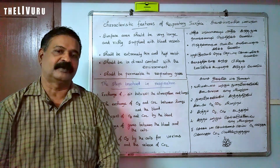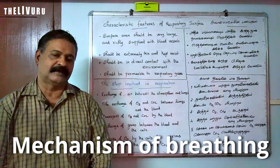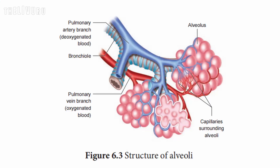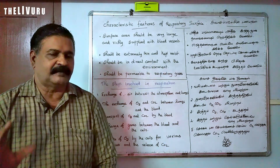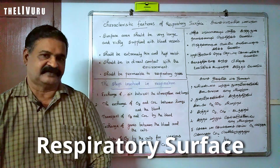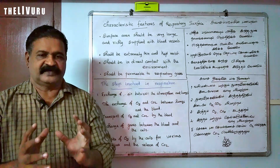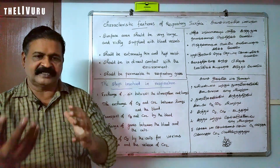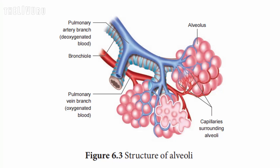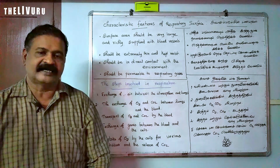In this video, we are going to see about the mechanism of breathing. Before that, in the last video, we discussed about the alveoli, which is known as the air sac. Alveoli are the air sacs. They are called the respiratory surface. Respiration means oxygen is taken in and carbon dioxide is liberated out. That takes place in the alveoli, that's why that region is known as the respiratory surface.